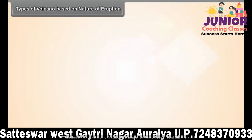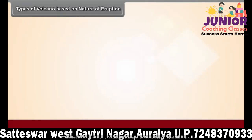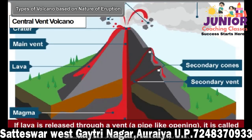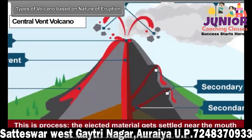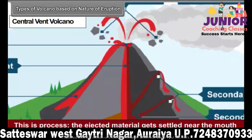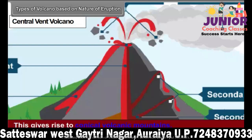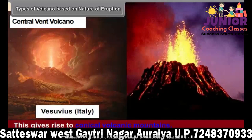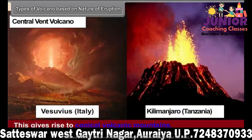Types of volcanoes based on nature of eruption. If lava is released through a vent, a pipe-like opening, it is called a central vent volcano. In this process, the ejected material settles near the mouth of the central vent, giving rise to conical volcanic mountains — for example, Vesuvius in Italy and Kilimanjaro in Tanzania.